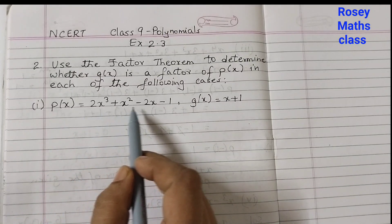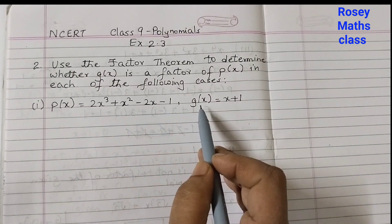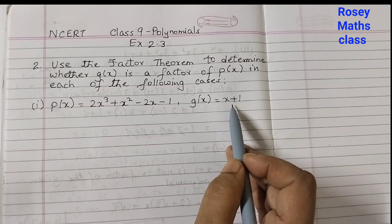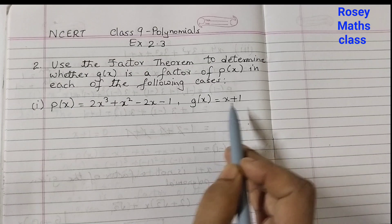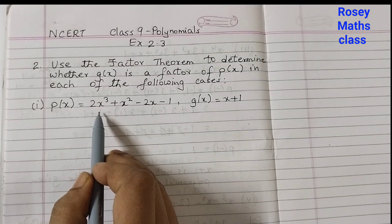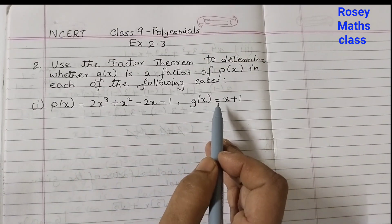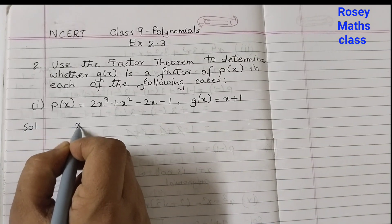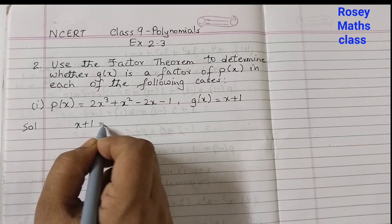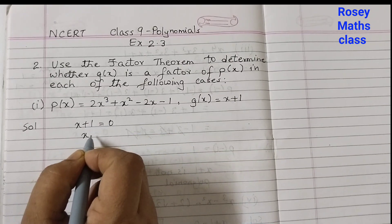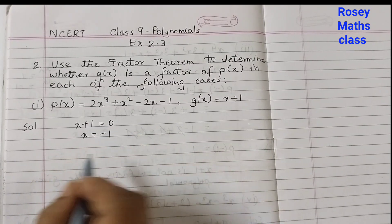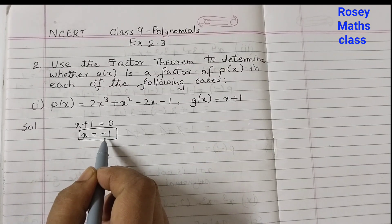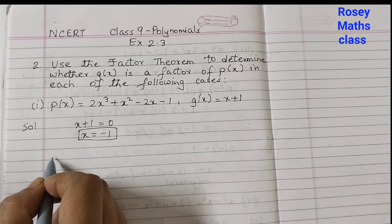First problem: p(x) equals 2x³ + x² − 2x − 1, and g(x) is given as x + 1. We need to check whether x + 1 is a factor of p(x). So first we need to find the zero. g(x) = x + 1, set this to 0: x + 1 = 0, therefore x = −1.